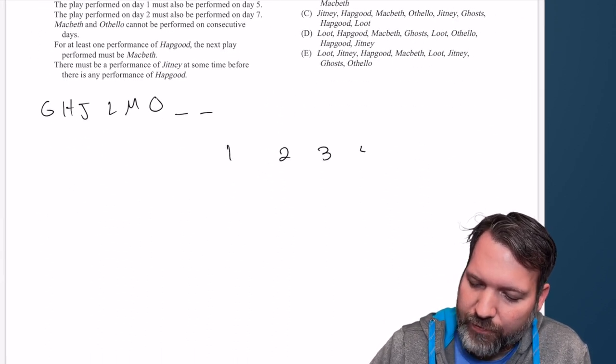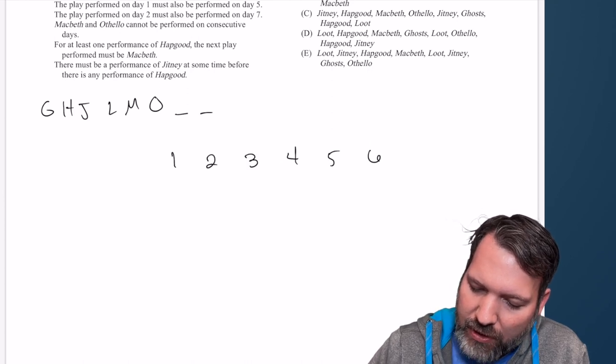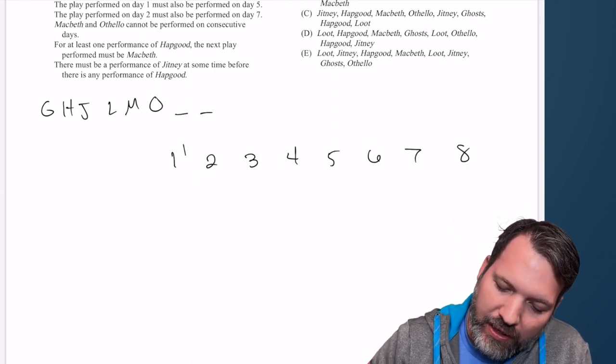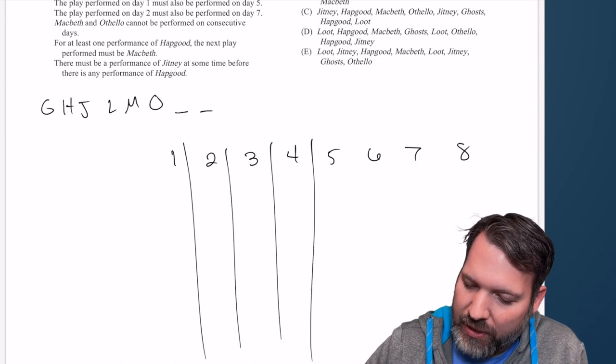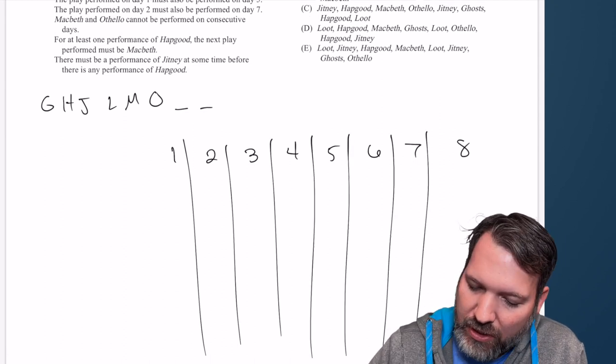There will be one performance each day subject to the following constraints. One, two, three, four, five, six. So this looks like six elements for eight spaces. One, two, three, four, five, six, seven, and eight. Six elements for eight spaces. Clearly, we're reusing something.